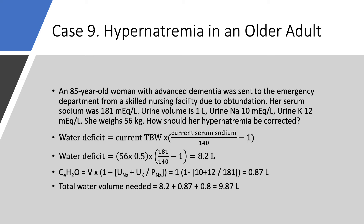How do we manage her hypernatremia? First, calculate water deficit: current total body water is 56 × 0.5 = 28 liters. Current serum sodium is 181, divided by 140 minus 1, giving a water deficit of 8.2 liters. Is this the total volume needed? No — we also have to add electrolyte free water clearance. Using the equation shown on screen, with urine sodium and urine potassium, we get 0.87 liters. Adding 8.2 + 0.87 + 0.8 (insensible losses) gives 9.87 liters total.